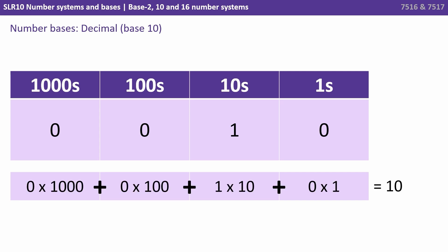We can see the number here 0010 is 0 lots of thousands plus 0 hundreds plus 1 lot of tens plus 0 ones. So that's 10.